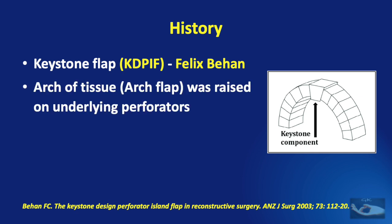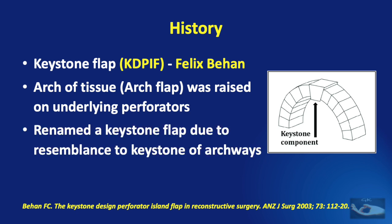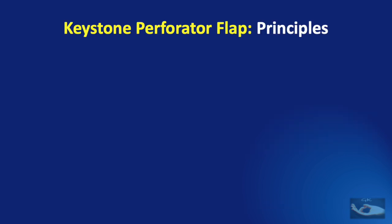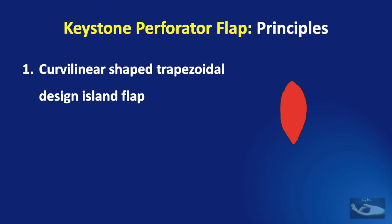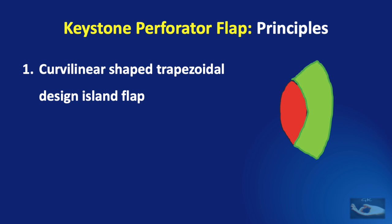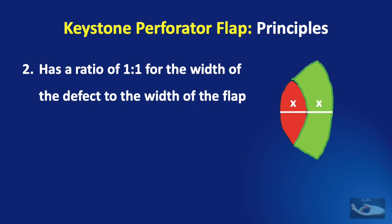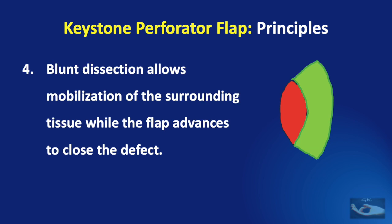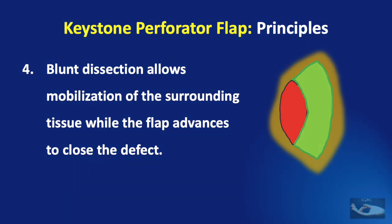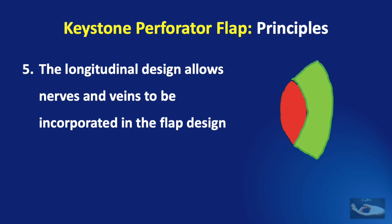Essentially, it was an arch of tissue raised on underlying perforators and renamed a Keystone Flap due to the resemblance to the keystone of archways. There are five basic principles of the classical Keystone Perforator Flap described by Felix Behan. The flap is designed for an elliptical defect and is a curvilinear shaped trapezoidal design island flap. The flap has a ratio of 1:1 for the width of the defect to the width of the flap. The length is determined by the size of the excised defect and a 90-degree angle is created at the limits of excision. Blunt dissection allows mobilization of surrounding tissues while the flap advances to close the defect; undermining the flap itself is not advised except in some types. The longitudinal design allows nerves and veins to be incorporated in the flap design.